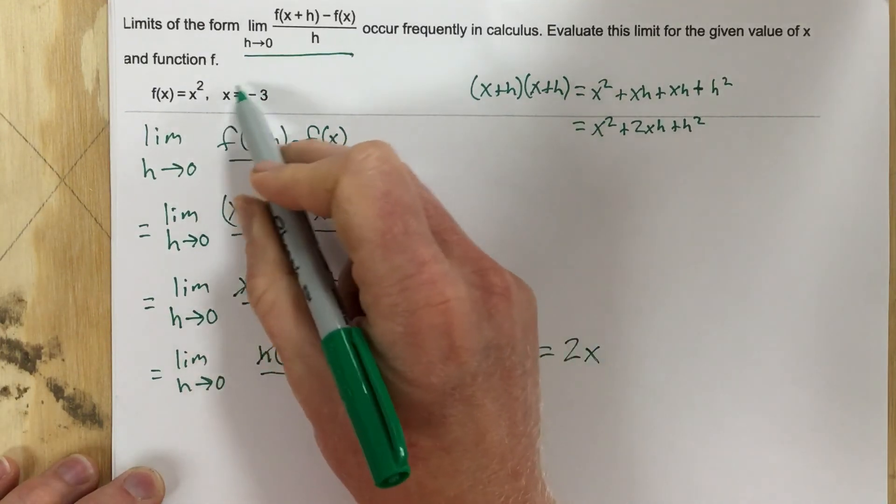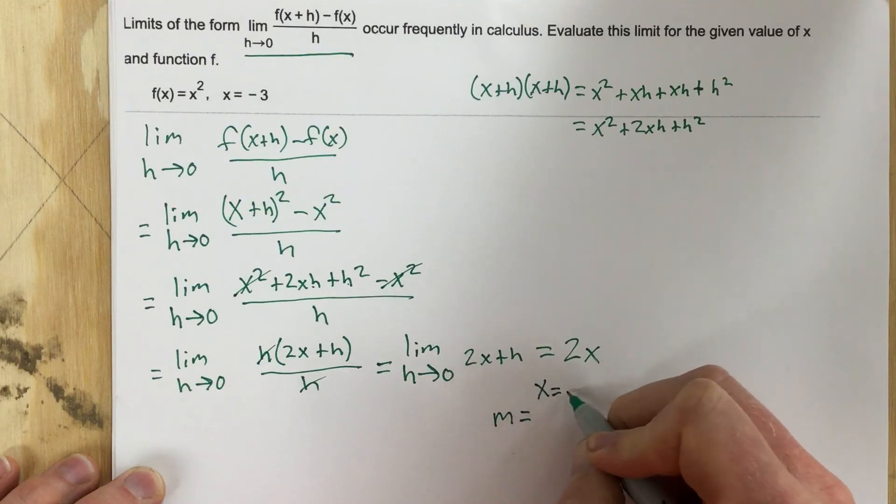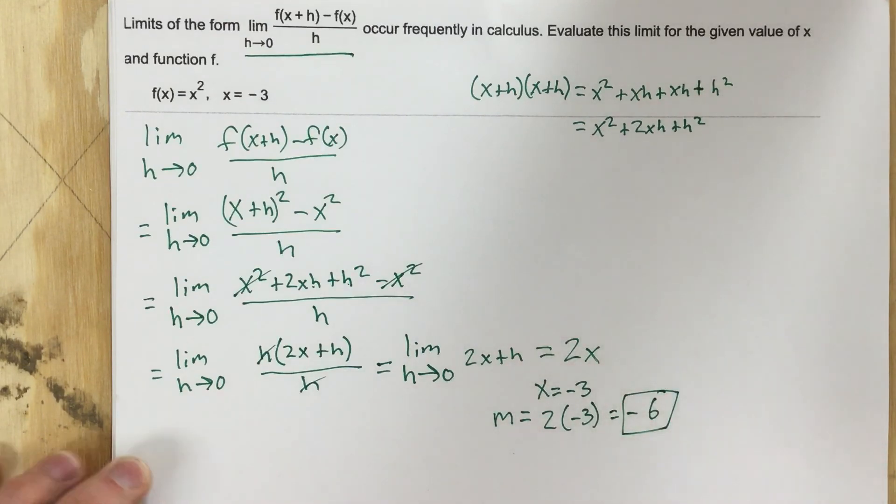Now they want us to evaluate this or find the slope. The slope is going to equal 2, and this is at x equals negative 3. So this equals 2 times negative 3, which is negative 6 for the solution. That's the slope for this x squared function at x equals negative 3.